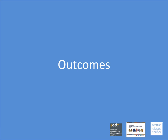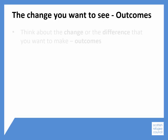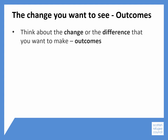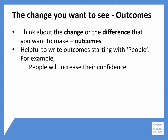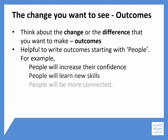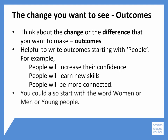Let's think about the change or the difference that you want to make — these are often called outcomes. It can be helpful when you're writing outcomes to start with the word 'people.' For example, 'people will increase their confidence,' or 'people will learn new skills,' or 'people will be more connected.'